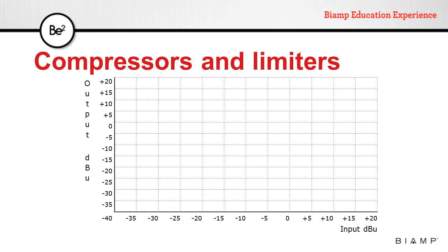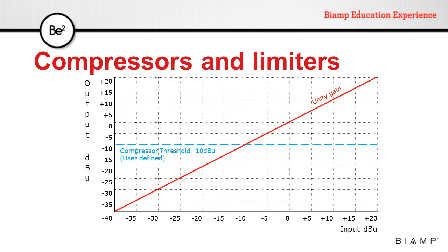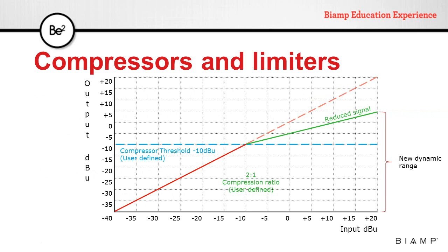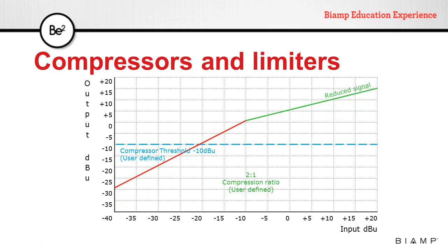When we pass signal through a compressor with a ratio of 1:1, the output is the same as the input — we have unity gain throughout the compressor. If we set a certain threshold and a compression ratio, the dynamic range of the signal is reduced. Adding makeup gain after the processor brings the signal back to unity gain. Note that by doing this, the peak level will be close to what it was before, but the RMS level will be higher.